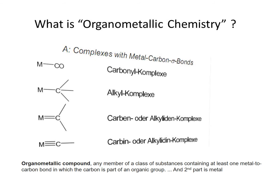So how can we define this? Organometallic compounds are any member of a class of substances containing at least one metal-to-carbon bond, in which the carbon is part of an organic group. Look at this slide — you can see a few structures. In the first, there is a bond between a metal and carbon, and especially the carbonyl complexes. The carbonyl complexes of coordination chemistry will be counted as organometallic compounds. This bond is a sigma bond between the metal and carbon — a sigma bond is called a head-to-head bond.